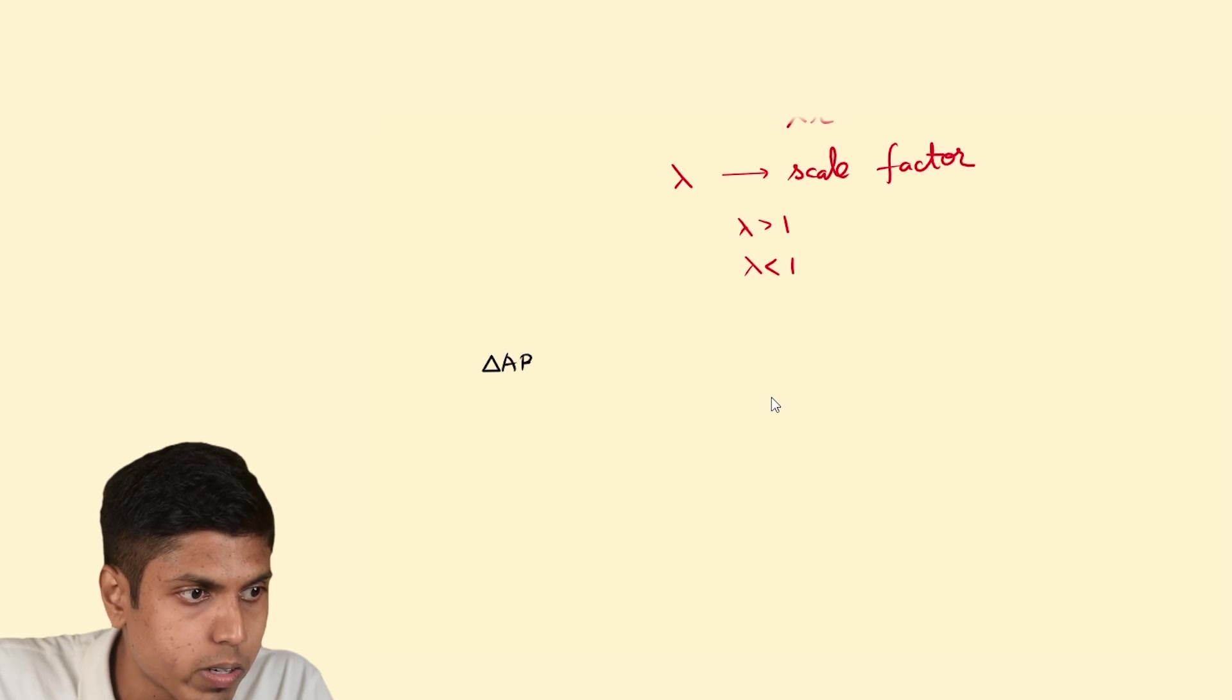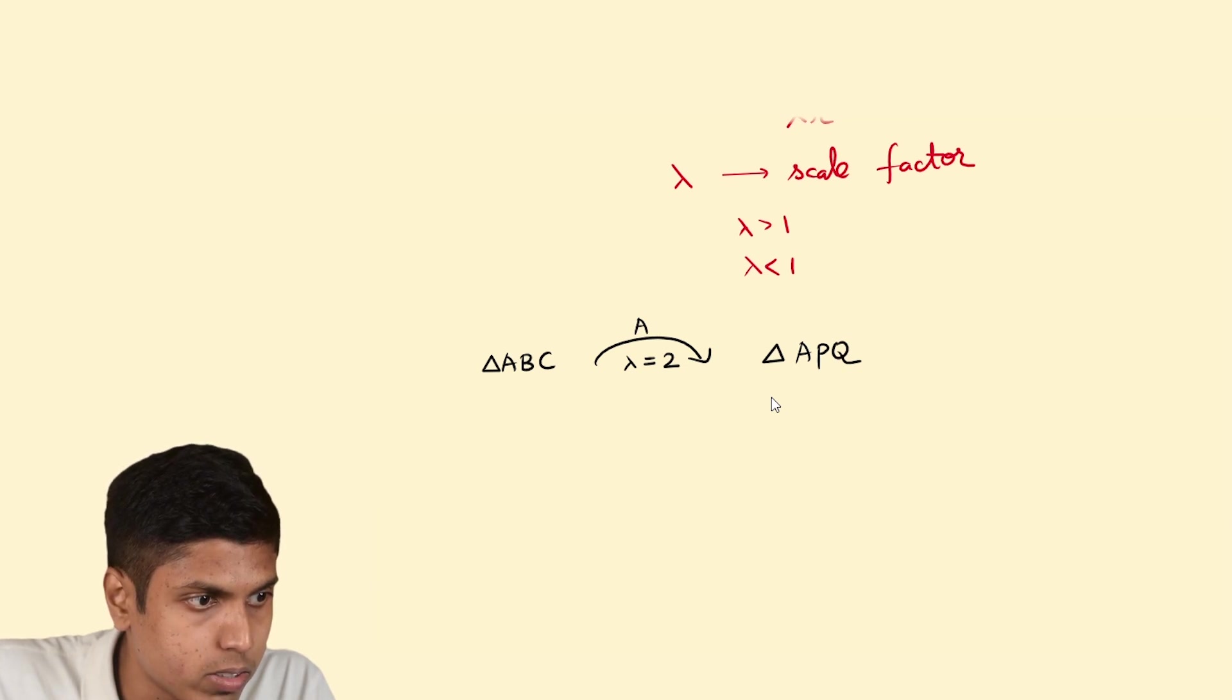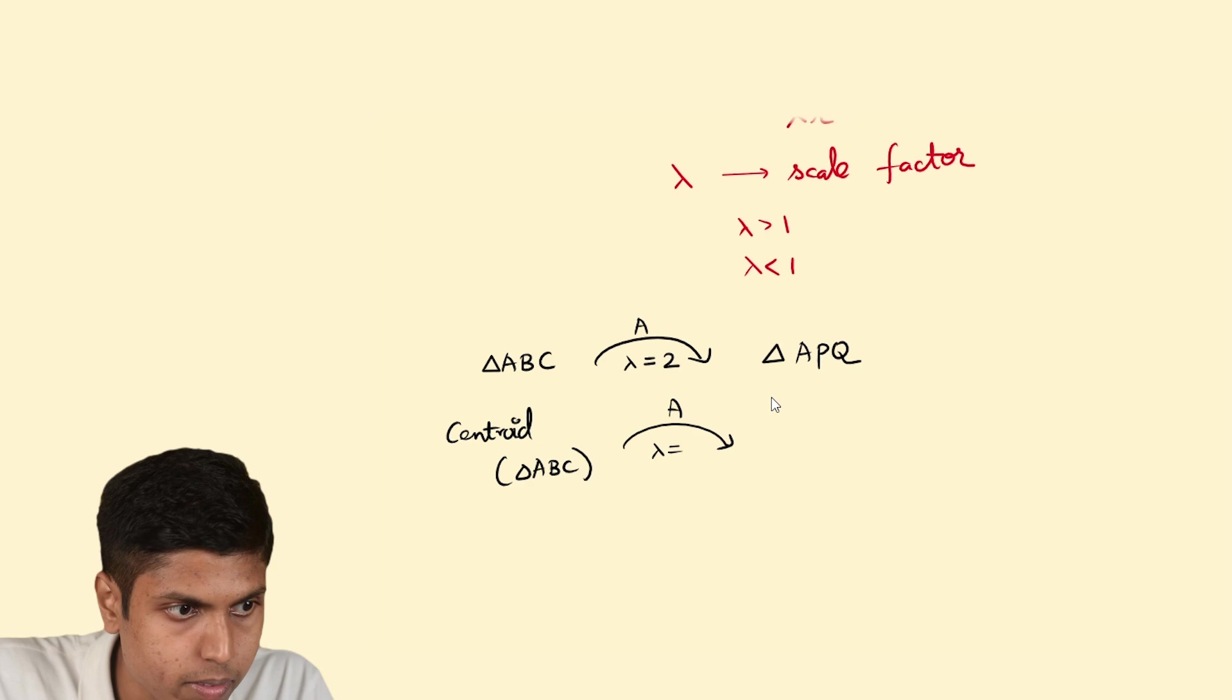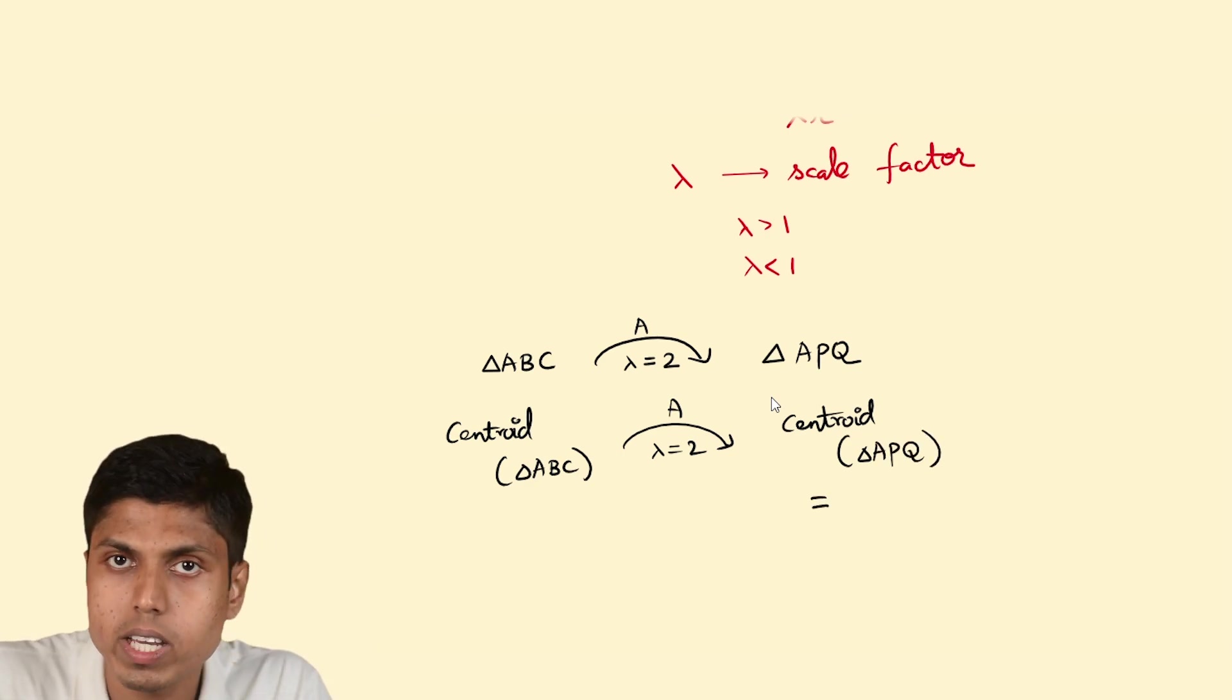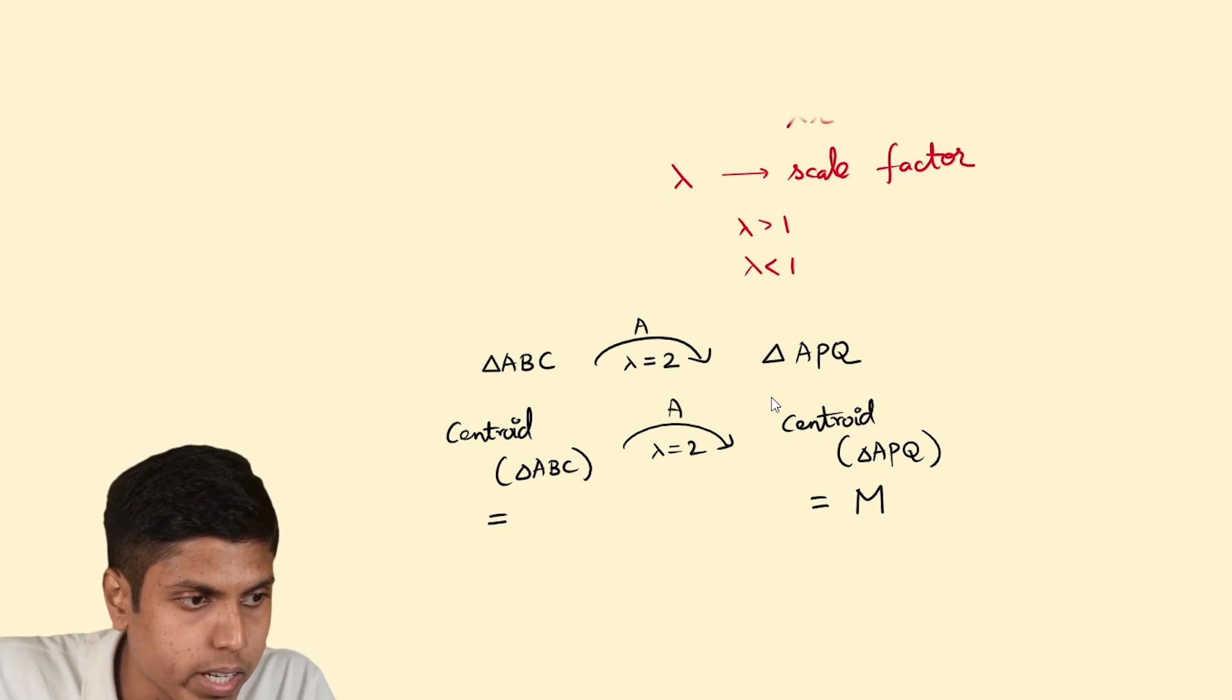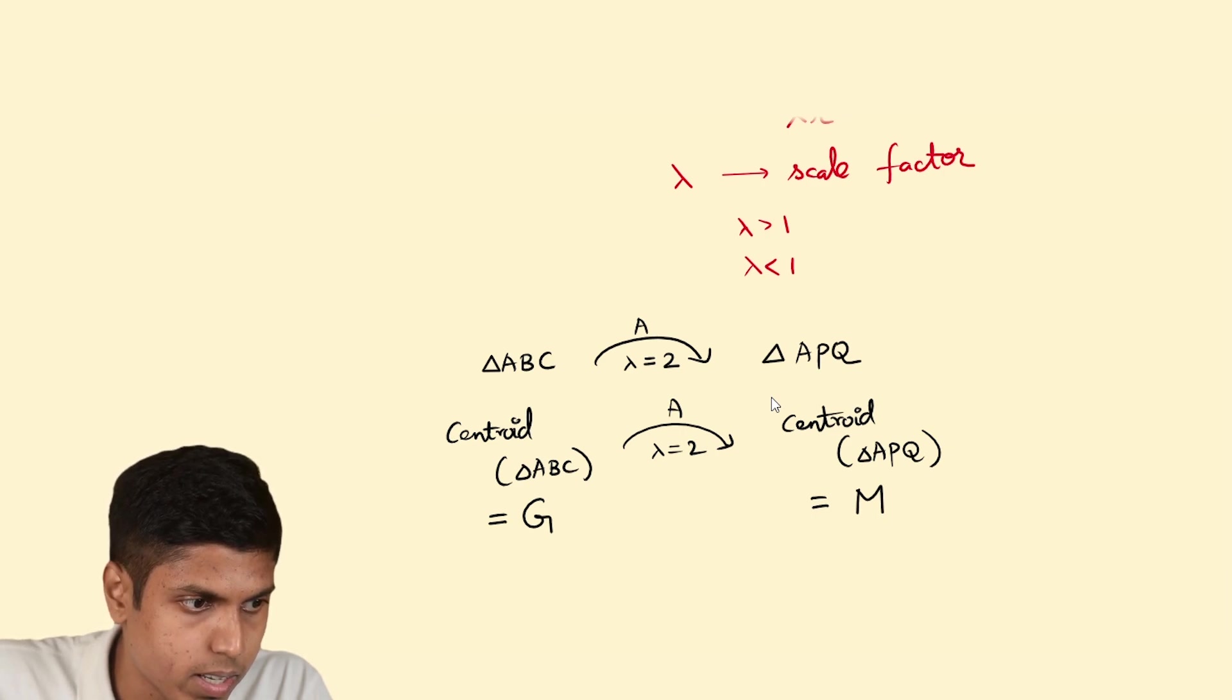M is the centroid of triangle APQ, thus M is the transformed point of centroid of triangle ABC because ABC goes to APQ, thus centroid of ABC goes to centroid of APQ. I know that upon homothety, triangle ABC with scale factor 2 goes to APQ. So the centroid of triangle ABC by the same homothety maps to centroid of triangle APQ. But I know centroid of triangle APQ is M and centroid of triangle ABC is G, so hence the point G goes to point M upon that homothety.